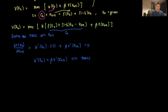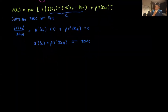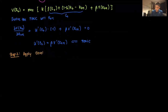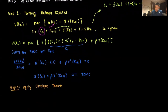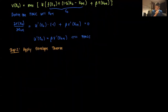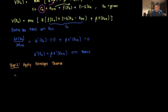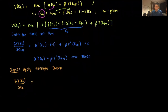Step 2: applying the envelope theorem. We derive our value function — the Bellman equation — with respect to kt. So V'(kt) equals u'(ct) times the derivative of the argument of u with respect to kt.